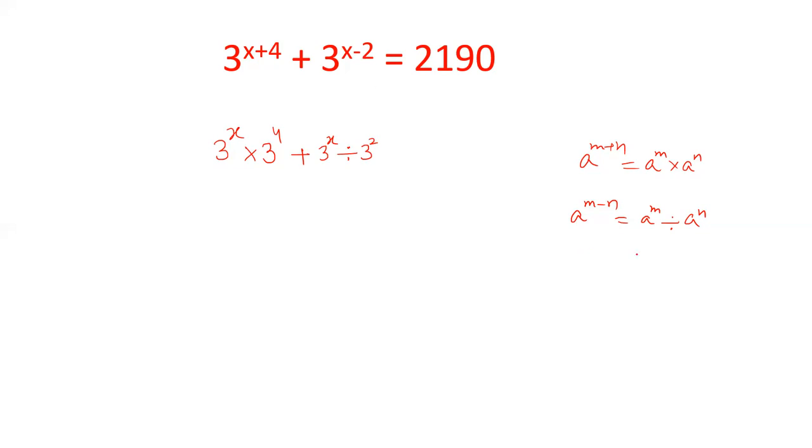The indices are in difference so we can apply this rule equals 2190. Now let's take 3 power x as y. This will be 81y plus y divided by 9 equals 2190. Let's take the LCM as 9. 9 into 81 is 729y plus y equals 2190.